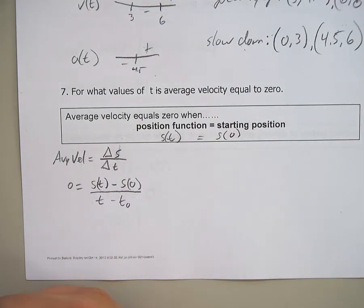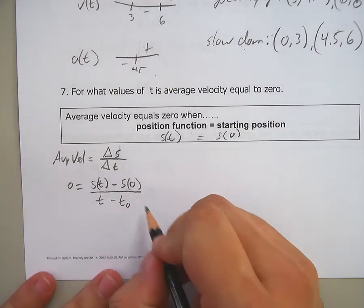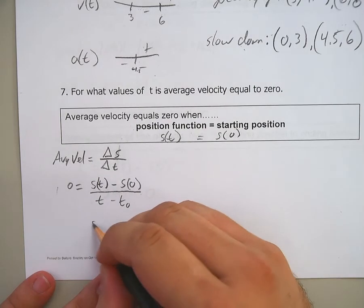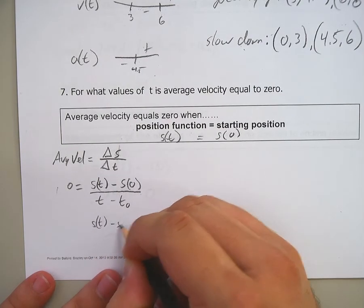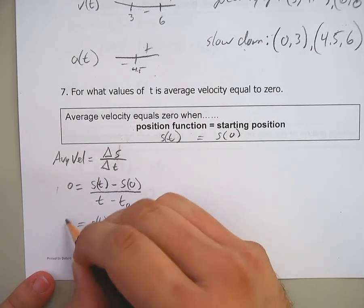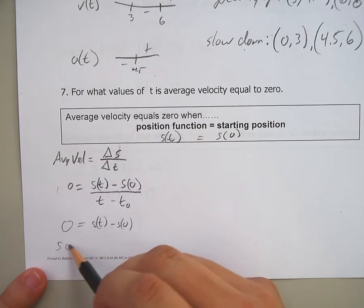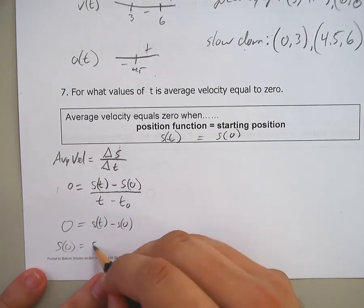T sub zero, rather. If you multiply this guy over here, your denominator is going to go away. So you've got s of t minus s of zero equals zero. Bring your s of zero over. Equals s of t.